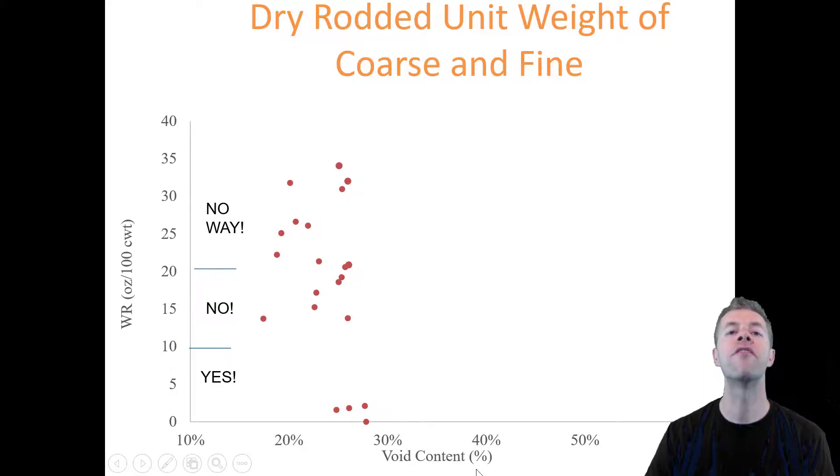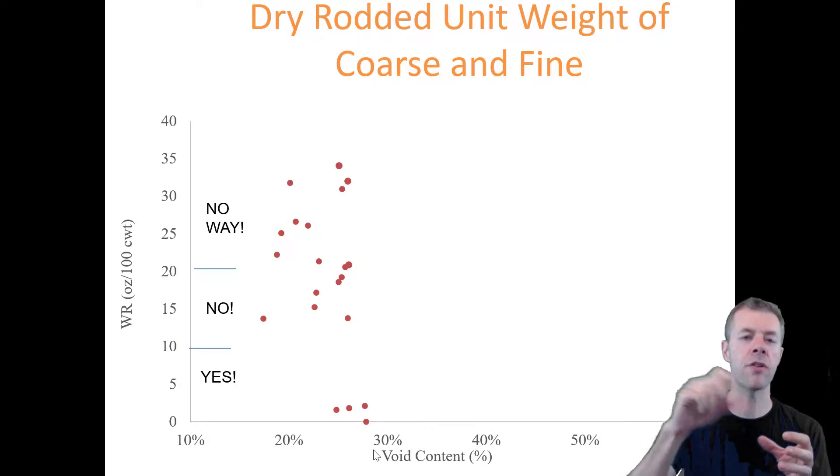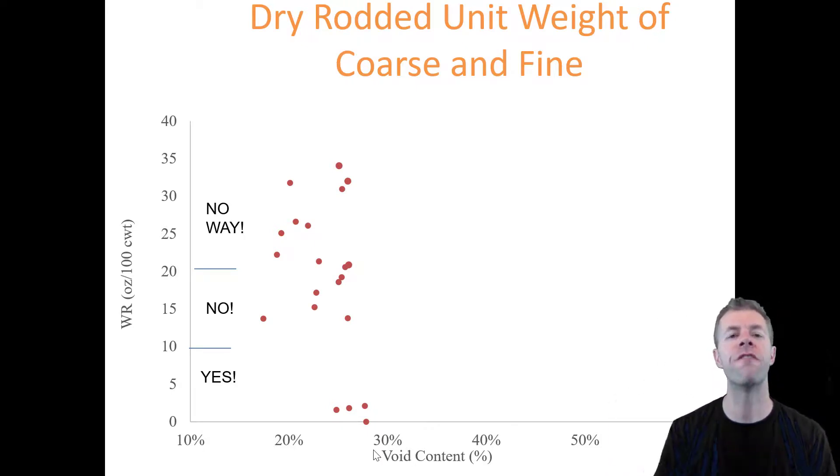But this is how their void content is reported based on the dry rodded unit weight. That means taking all of the fine and all of the coarse, mixing it up, putting it in a bucket, rodding it 25 times, smacking it. You do that three times. You finish the top, make it smooth, and then you weigh how much material. And there's a lot of people that think that the lower the voids content or the higher the density, the better your concrete will perform. That is not what this data shows. This data shows that some of the ones with the lowest voids content had some of the worst performance. And some of the ones with the highest voids content had much better performance.